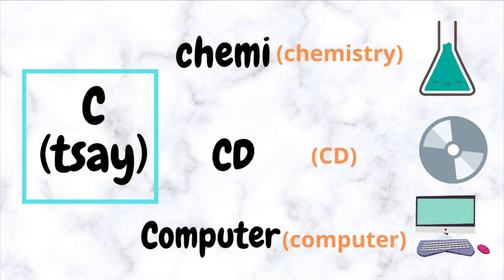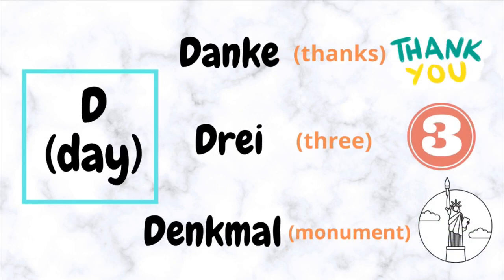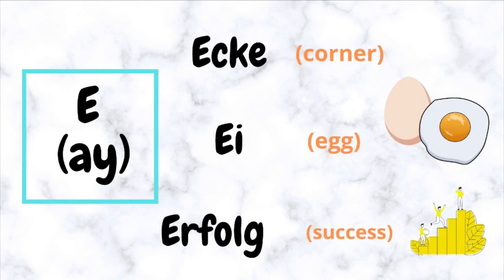C (Say) — for example: Schirme. D (Day) — for example: Computer, Day.